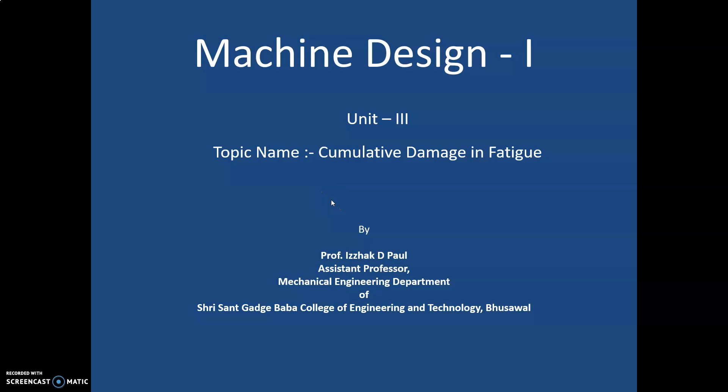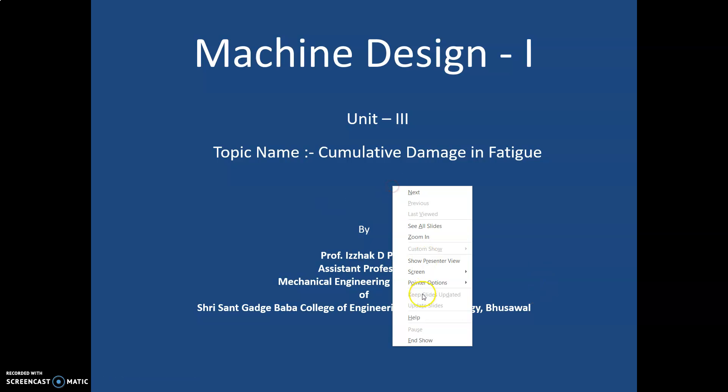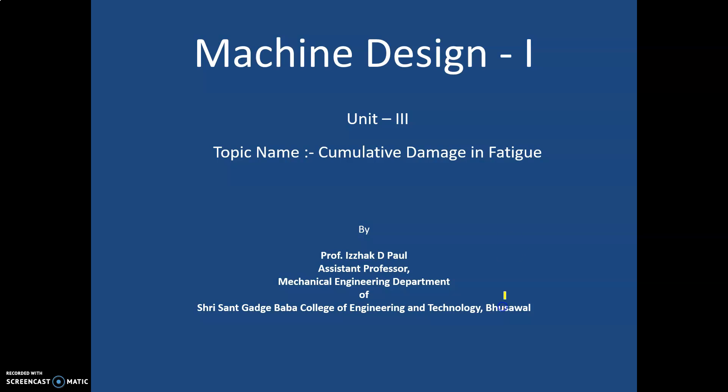The next topic is cumulative damage in fatigue. Cumulative damage means permanent damage after alternating stress. If the alternating stress value is increased above the endurance limit, then cumulative damage can occur.